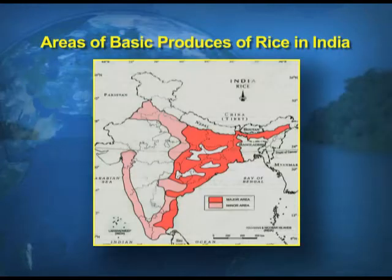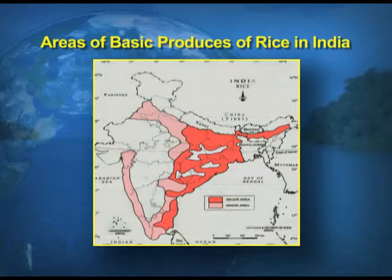Here is a map showing the major rice-producing areas in India. You can see the coastal areas and northern India — basically the Indo-Gangetic plain — are the primary regions for rice production in India.